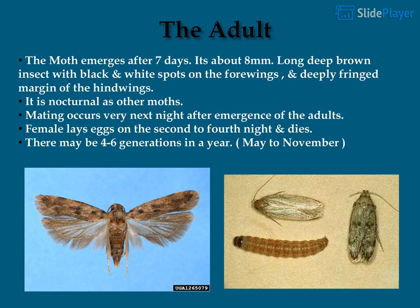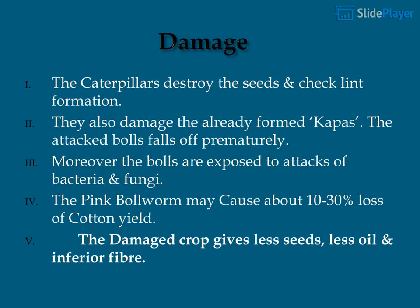There may be 4 to 6 generations in a year, from May to November. The caterpillars destroy seeds and check lint formation. They also damage already formed bolls, which fall off prematurely, and expose bolls to attacks by bacteria and fungi. The pink boll worm may cause about 10 to 30 percent loss of cotton yield, giving less seeds, less oil, and inferior fiber.